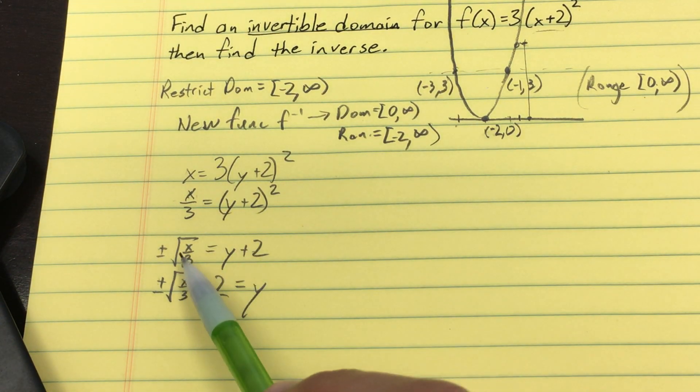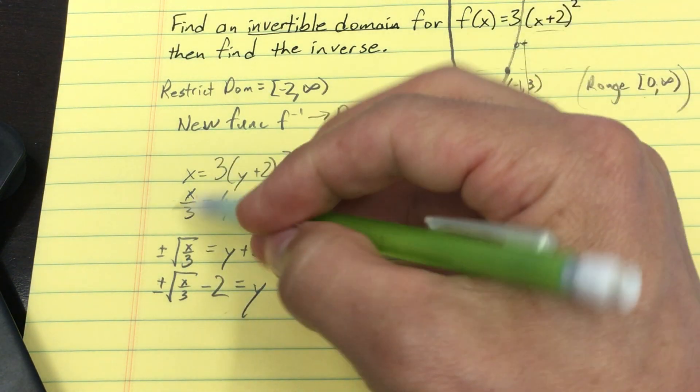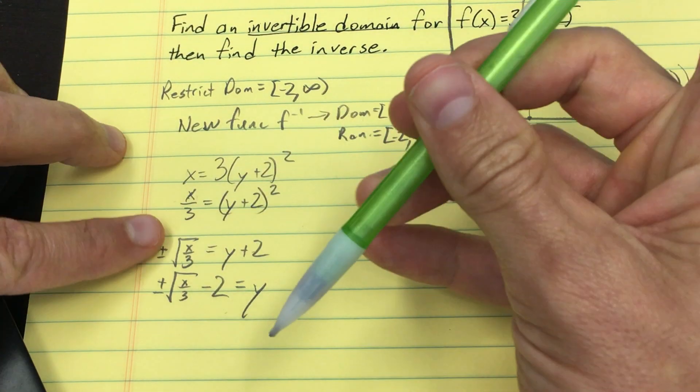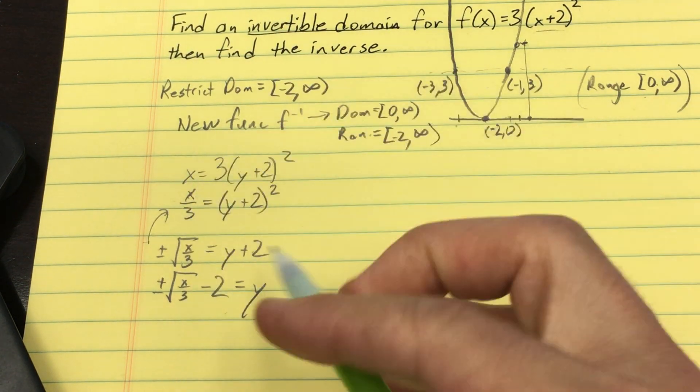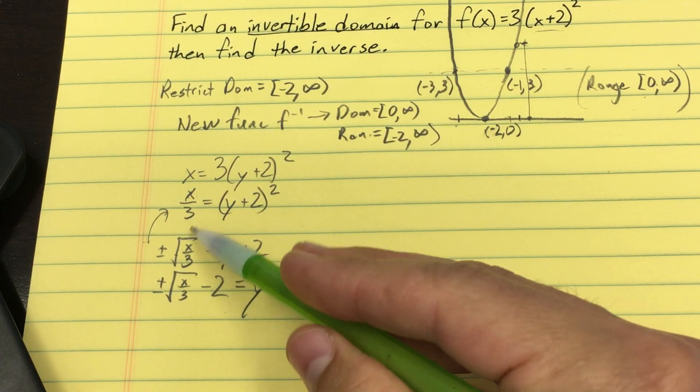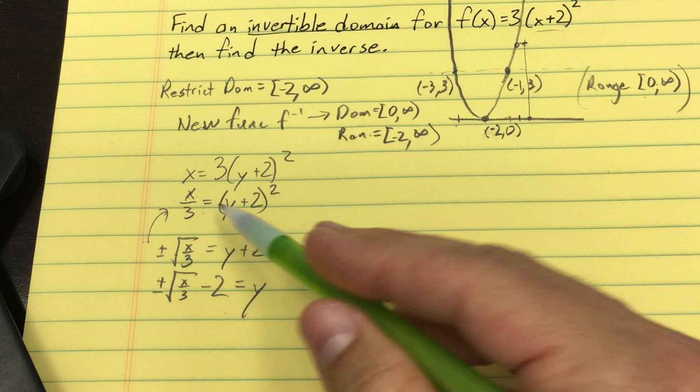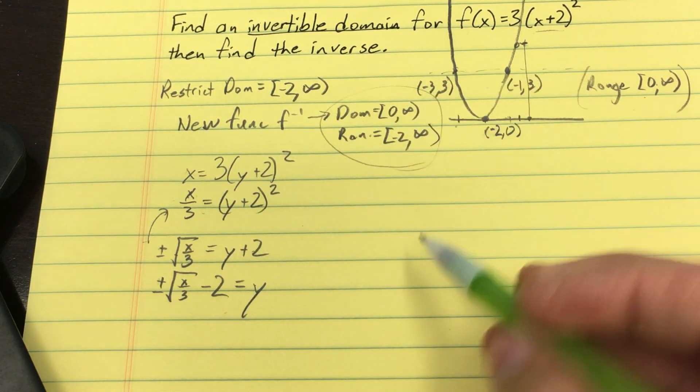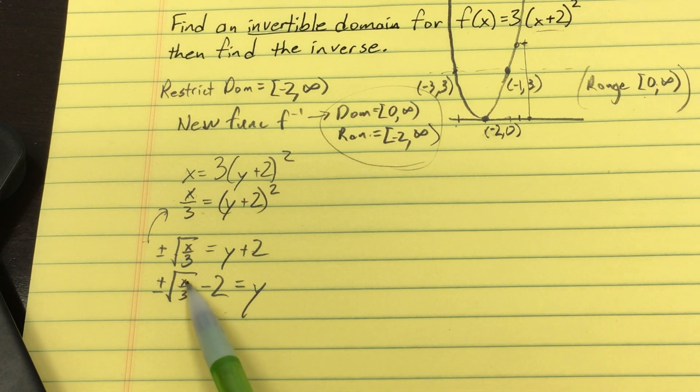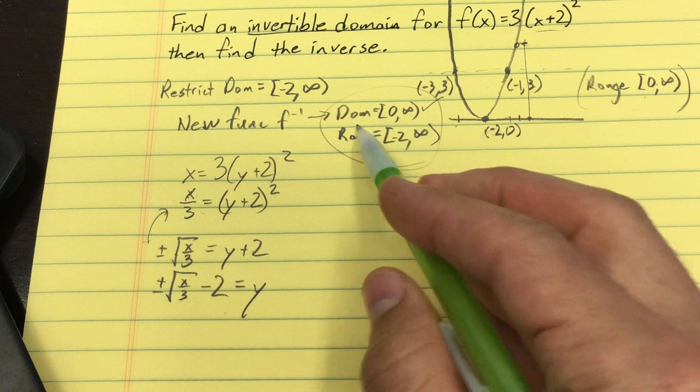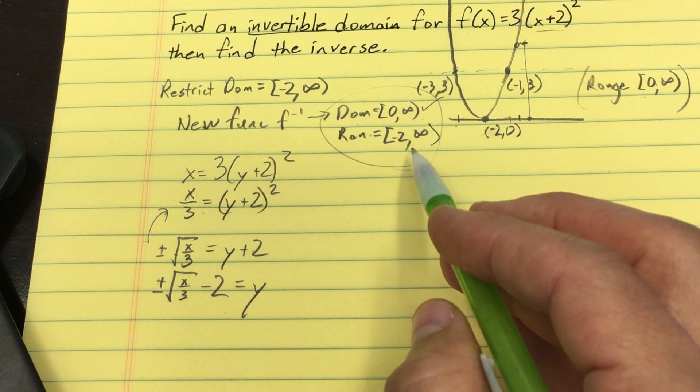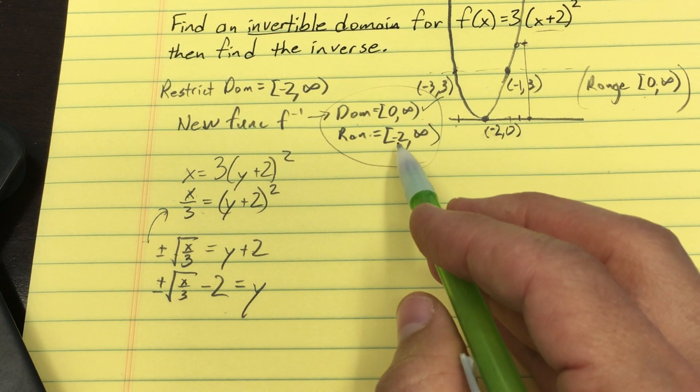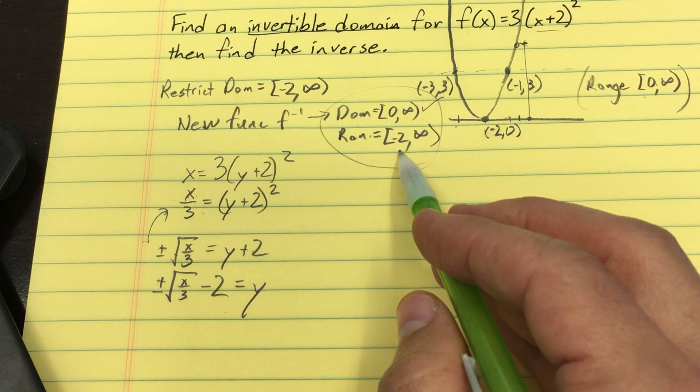Now, notice that if you squared both sides of this, you would get to this equation. So that plus or minus is actually necessary to communicate that either the positive or the minus, if you squared it, you would get back to this line. But which of these actually corresponds to the domain and the range that I want? Well, notice x/3 is inside a square root, so my domain is taken care of.